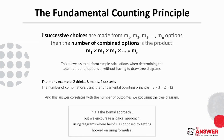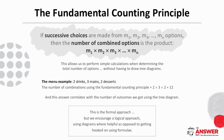Before we go to the example itself, let's look at what the fundamental counting principle is first. If successive choices like our drinks, mains and dessert options are made from however many options, then the number of combined options is the product as shown here.